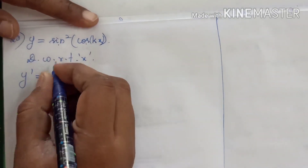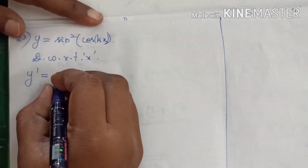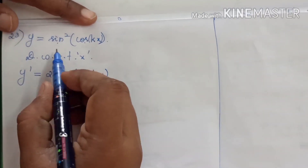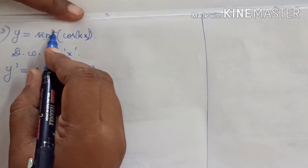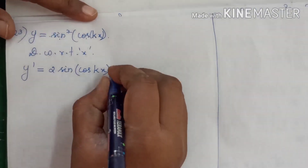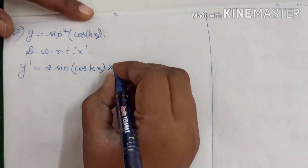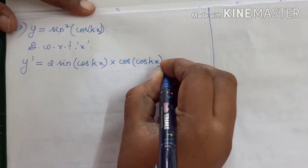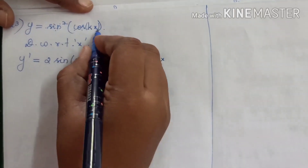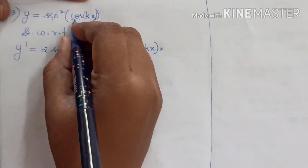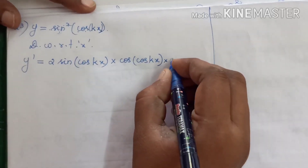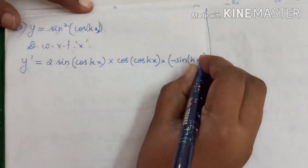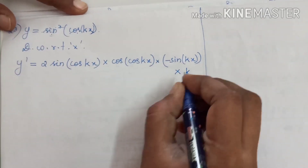So y dash equal to — differentiating sin squared gives 2 sin, then we differentiate cos of kx, giving into sin of kx, and finally differentiating kx gives into k.